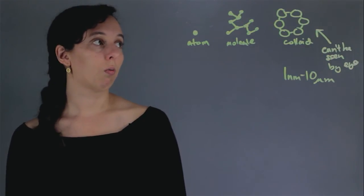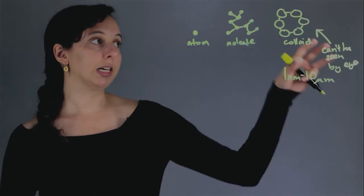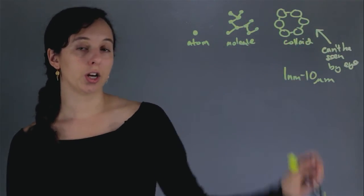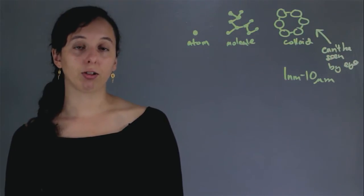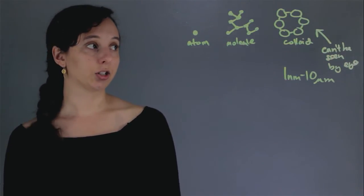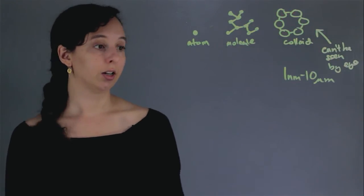When we say colloid, what we usually mean is some of these collections of molecules dissolved in a liquid. It's a liquid that, if you looked at it, looks like one thing, but it's actually a bunch of particles that are just too small to be seen.